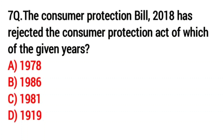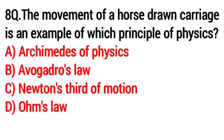Question number seven: the Consumer Protection Bill 2018 has replaced the Consumer Protection Act of which of the given years? Answer option B, 1986. Question number eight: the movement of a horse-drawn carriage is an example of which principle of physics?